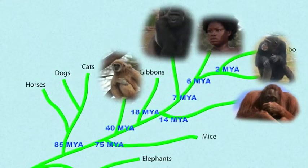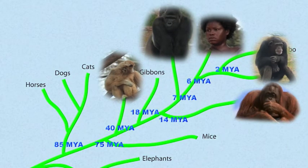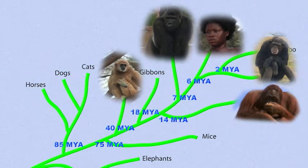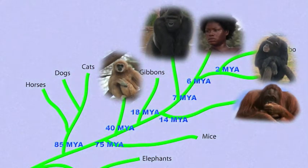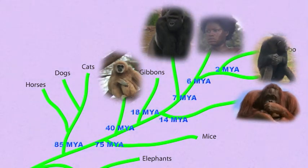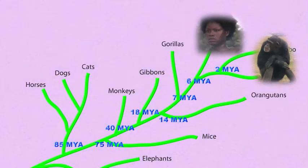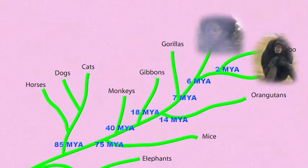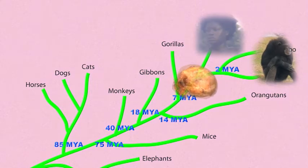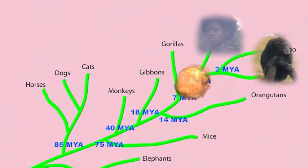A common misconception is that some modern species are descended from other modern species. This is rarely the case. Instead, closely related modern species evolved from a common ancestor — that is, neither one nor the other. Humans did not come from chimps. Both humans and chimps came from a creature that had more primitive features than either modern humans or modern chimps.